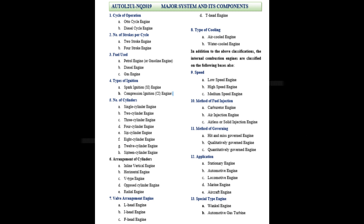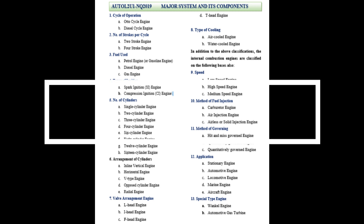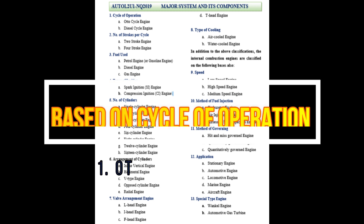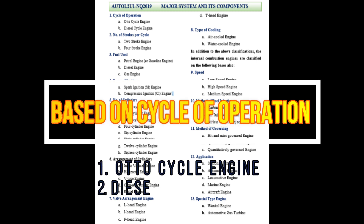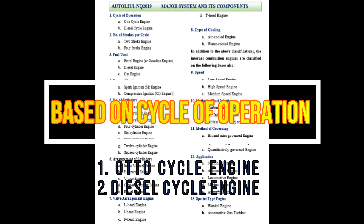First type: cycle of operations. Engines operate on the Otto cycle or the Diesel cycle — named after Rudolf Diesel. Note: cycle here means thermodynamic cycle, not bicycle.